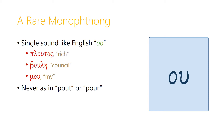And so we have the words 'ploutos', meaning 'rich', 'boule', which means 'counsel', or 'mou', which is actually the Greek word for 'my'. This combination omicron-upsilon never combines to make the 'ow' sound that we get in the English 'pout', or the long o sound in 'pour'. It always combines to make the 'oo' sound.